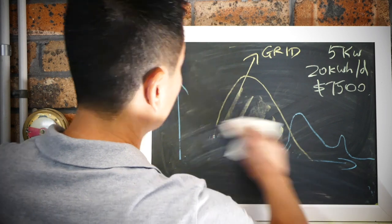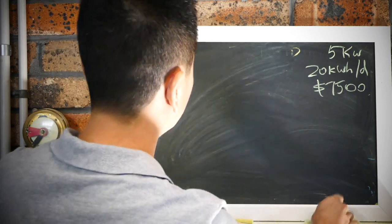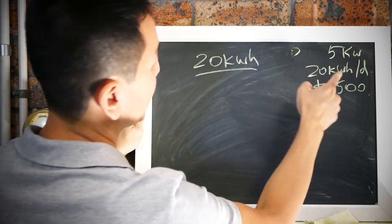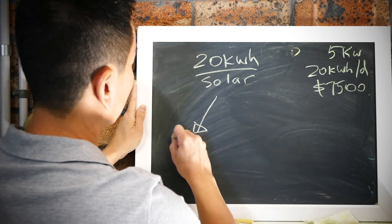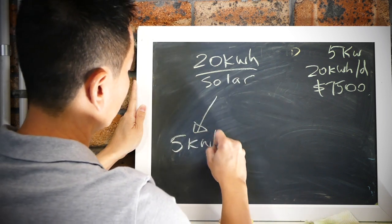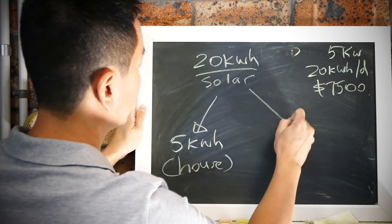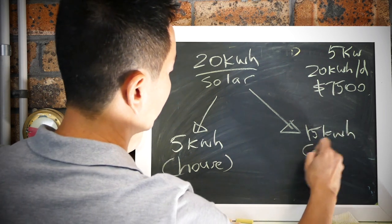So if you've got 20 kilowatt hours of solar production per day, five of those kilowatt hours will be going to the house and then 15 will be going to the grid. Very simple, five to the house, 15 to the grid.